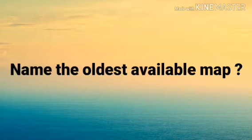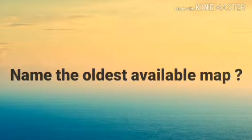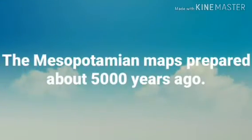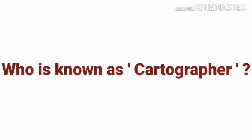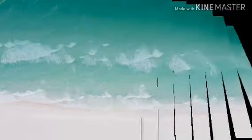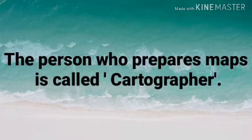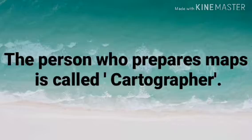Name the oldest available map. The Mesopotamian maps prepared about 5000 years ago. Who is known as a cartographer? The person who prepares maps is called a cartographer.